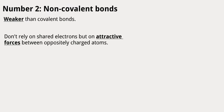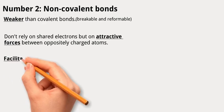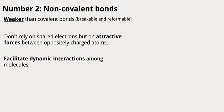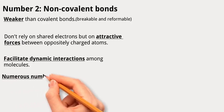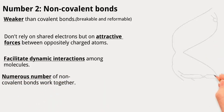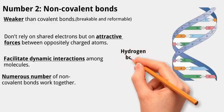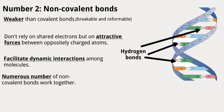Each non-covalent bond is individually weak, about one to five kilocalories per mole, making them easily breakable and reformable. This characteristic allows non-covalent bonds to facilitate dynamic interactions among molecules in the cell, a crucial aspect of biological processes. Although each non-covalent bond is weak on its own, when numerous bonds work together, such as in DNA strands or different parts of large proteins, their collective attractive forces add up.